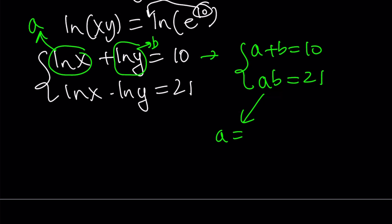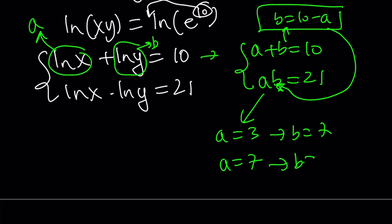And even if you didn't know what those numbers are, you could also do the following. You could just isolate b from here. Write it as 10 minus a. Take that. Substitute into the second equation. And then from there you're going to get a quadratic. If you solve, you're going to get these values for a and for b. If a is 3, b is 7. If a is 7, b is 3.